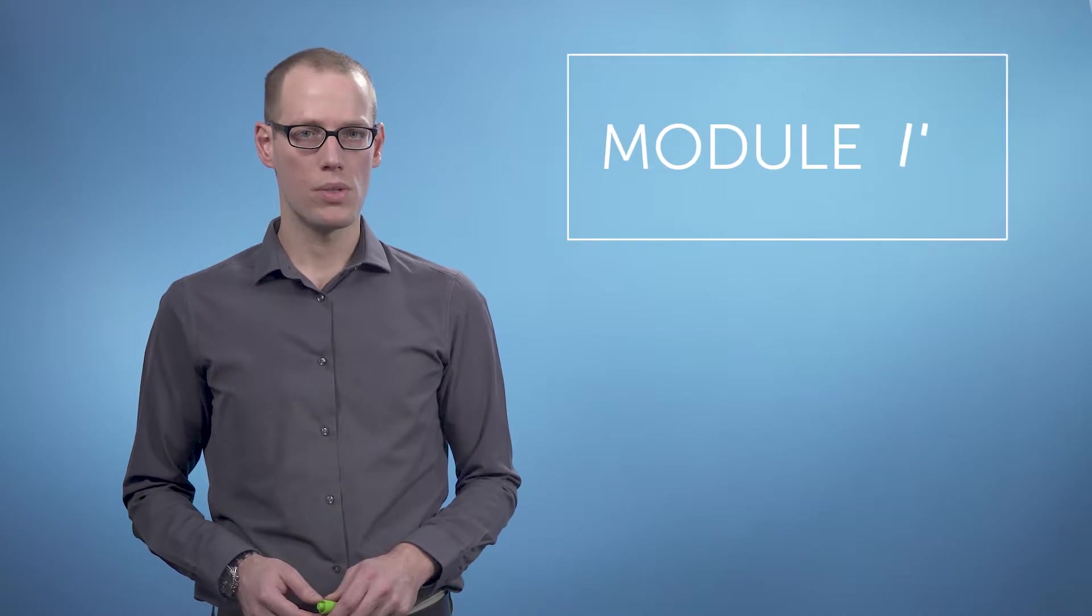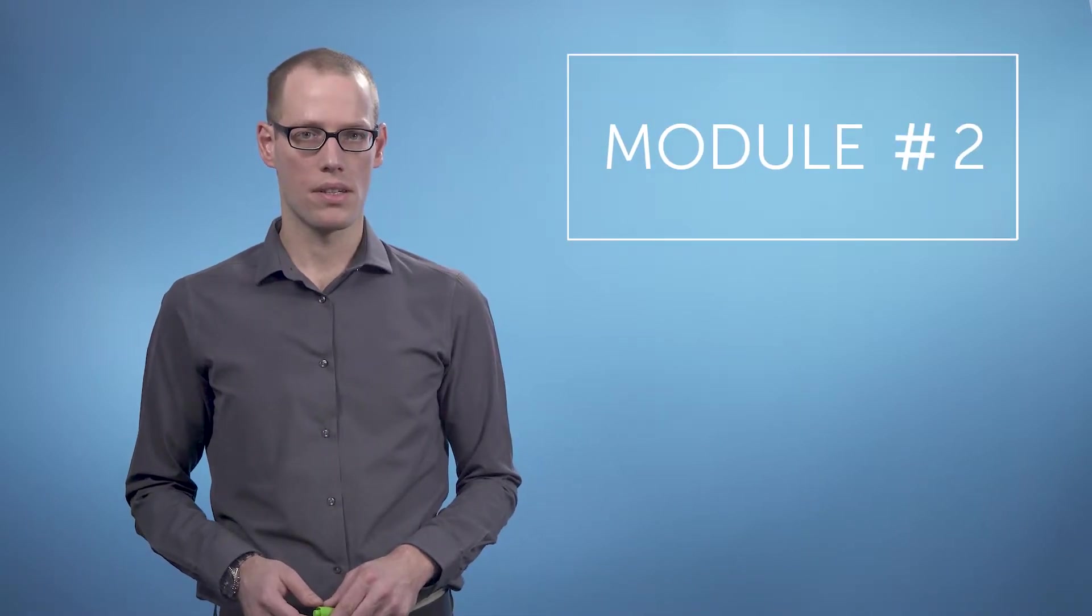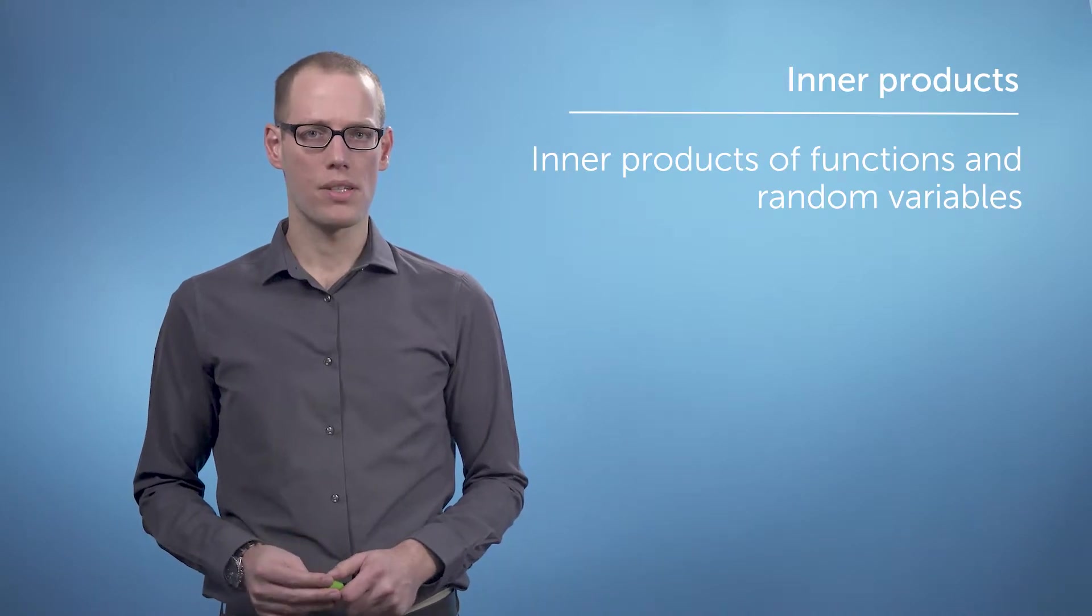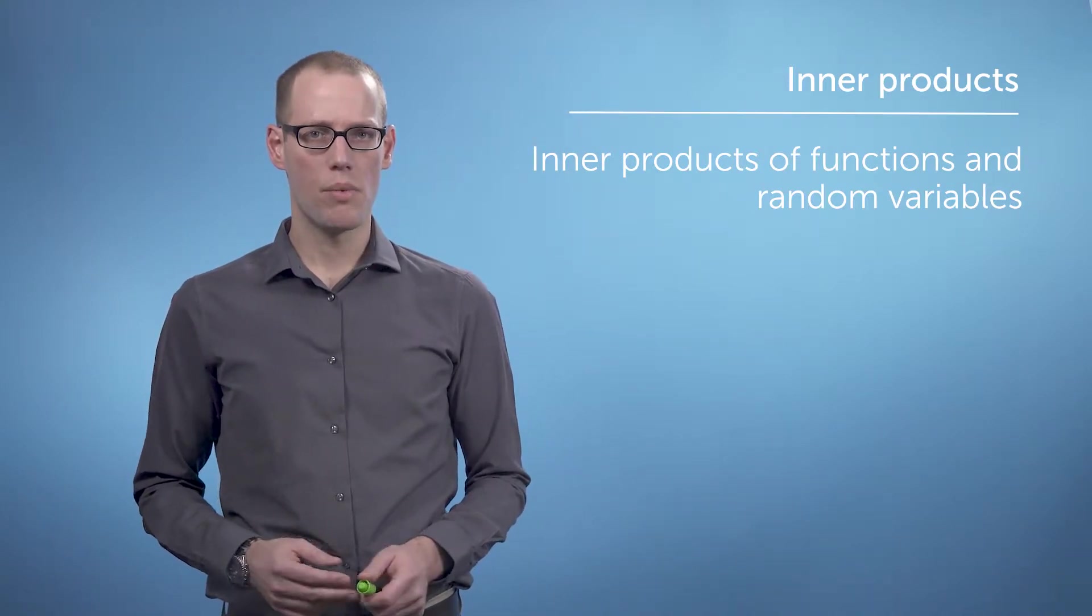In the previous videos, we looked at properties of inner products to compute lengths, angles and distances. We focused on inner products of finite dimensional vector spaces. In this video, we will look at two examples of inner products of other types of vectors: inner products of functions and inner products of random variables.